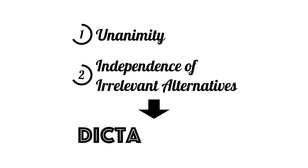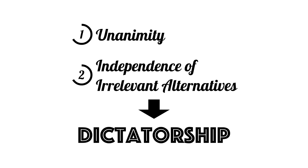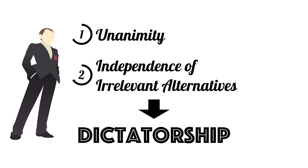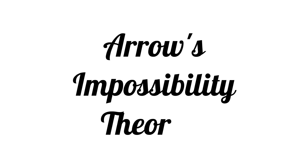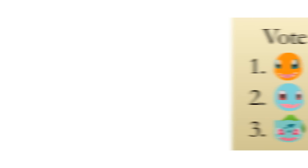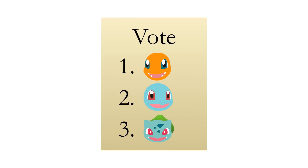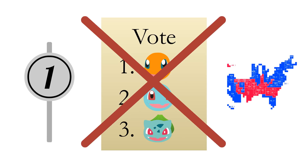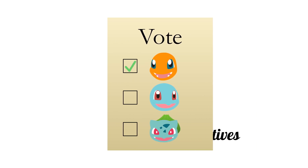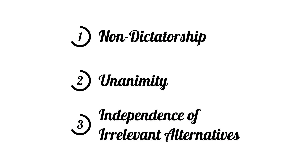In other words, the only voting system where we get unanimity and independence of irrelevant alternatives is a dictatorship where one person decides the entire election regardless of what anyone else has to say. Mr. F's voice is the only one that matters. This result, proved by Kenneth Arrow, is known as Arrow's impossibility theorem. At a high level, Arrow's theorem tells us that it's impossible to have fair elections using voters' ranked preferences. It doesn't matter how you try to obfuscate it with rounds or the electoral college — any system that collects votes through ranked preferences or less must violate at least one of the properties outlined by Arrow's theorem.